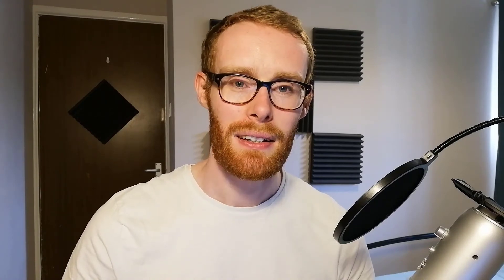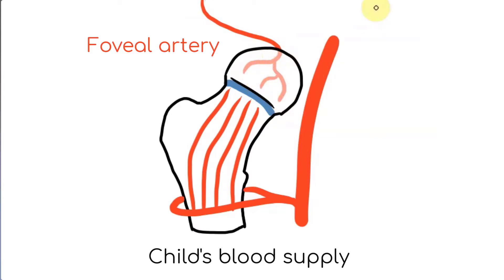So how do we get blood supply to the head? Well in children there's an extra vessel, a branch of the obturator artery known as the foveal artery, that enters the head here. This means that children have two blood supplies to the proximal femur: one below the growth plate and one above.